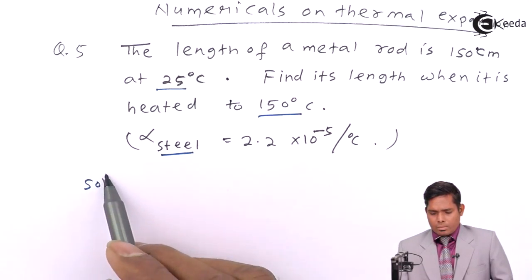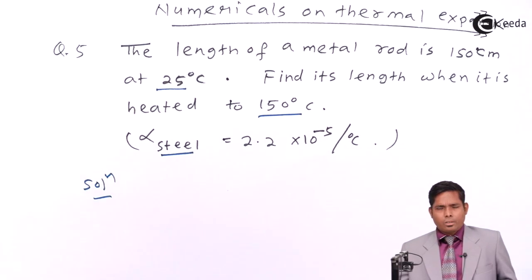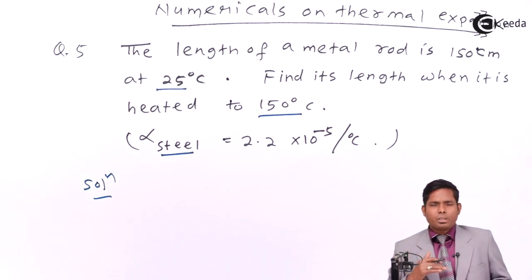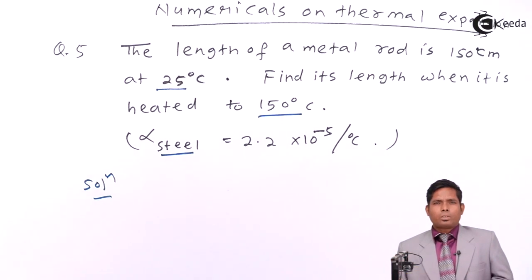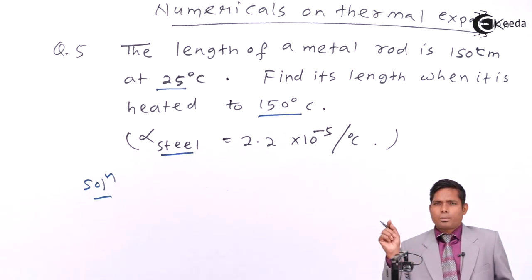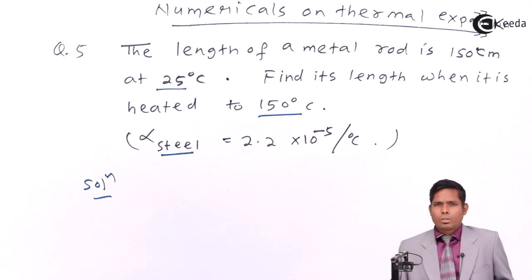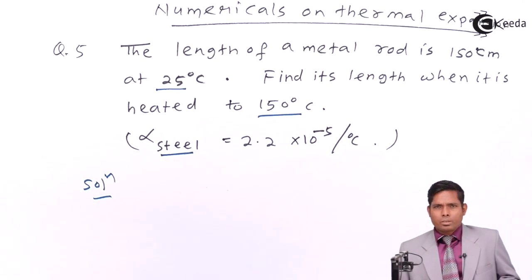The solution is very simple. Though it is not given the length at 0°C and from 0 to a certain other temperature, it is given from one temperature to another temperature other than 0. Then also we can use the same formula, because in case of 0 to temperature T, we use L_t = L_0 × (1 + α·ΔT). If it is from T1 to T2, then you can use L2 = L1 × (1 + α·(T2 − T1)).